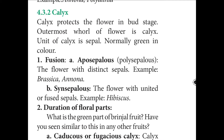Calyx is the outermost whorl of the flower; it is normally green and protects the flower in the bud stage. Based on the fusion of sepals, calyx is classified into aposepalous (polypetalous), where sepals are free — example: Brassica, Annona — and synsepalous, where sepals are united or fused — example: Hibiscus.